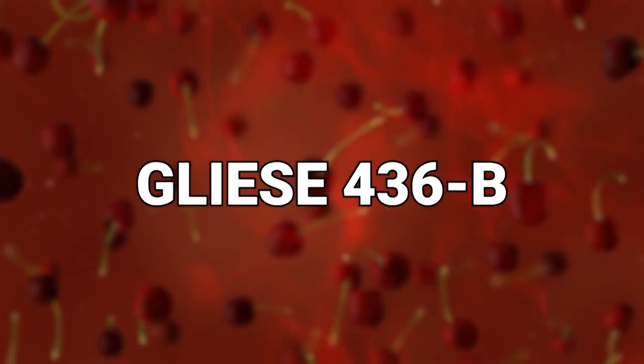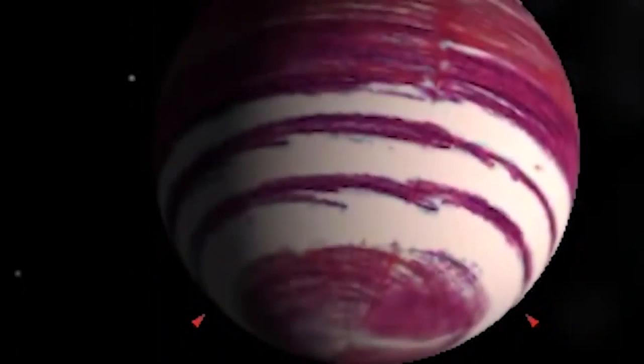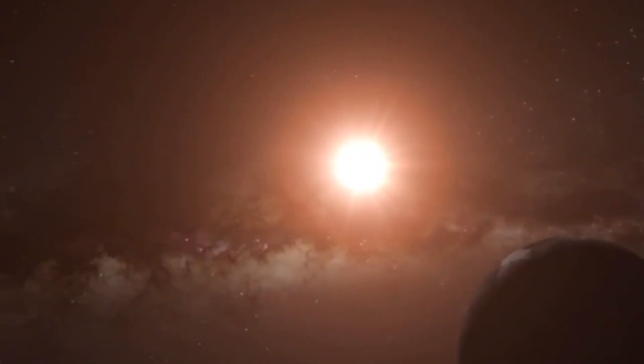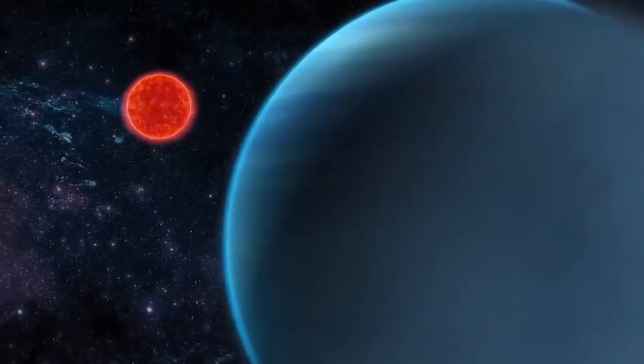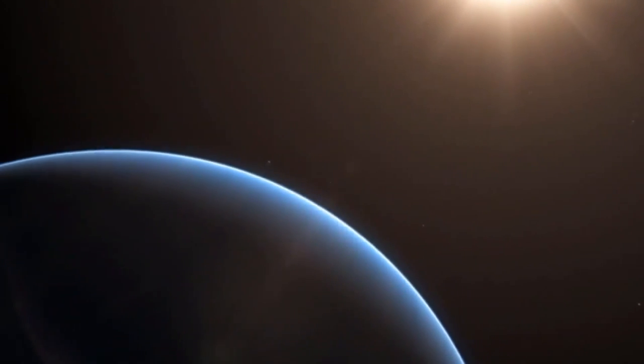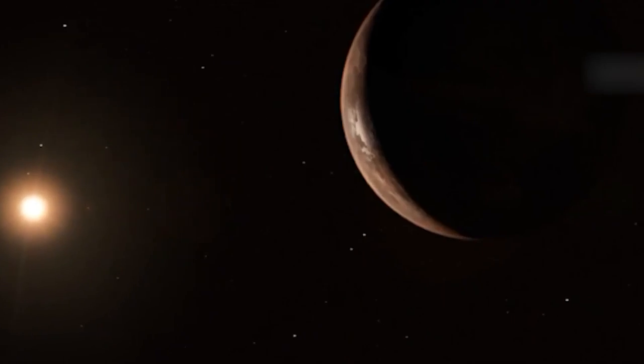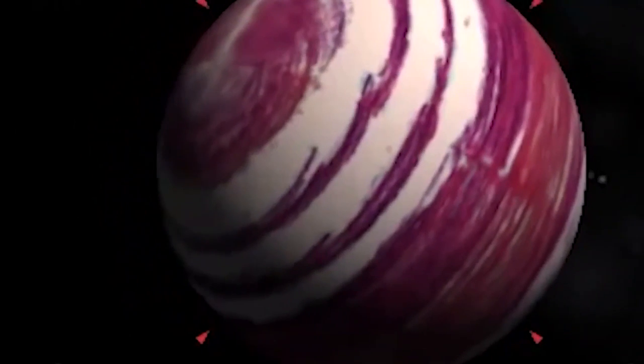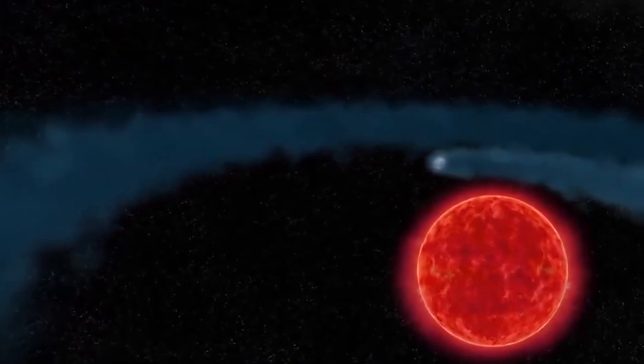Number 18: Gliese 436b. If Gliese 436b sounds like another boring name for a planet, well you should get used to it, because not every planet is going to get a name like Earth, or Venus, or Uranus. But don't forget, there are potentially hundreds of billions of planets out there in the universe. Not every one of them is going to sound cool. If I were to label this planet though, I would be sure that it would be called something like Hot Ice, because that's exactly what you're going to find there.